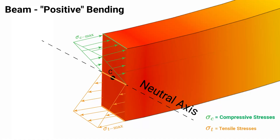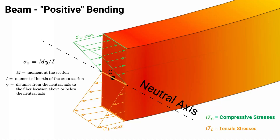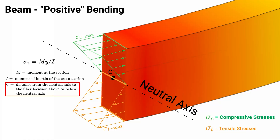We can calculate these bending stresses using a handy formula found in the handbook. The bending stress developed equals the moment at any section — in this case, at the middle section where the maximum moment occurs — multiplied by the y value, which is the distance from the neutral axis to any fiber location. Note: you must start at the neutral axis. Then divide by I, the moment of inertia of the cross section.